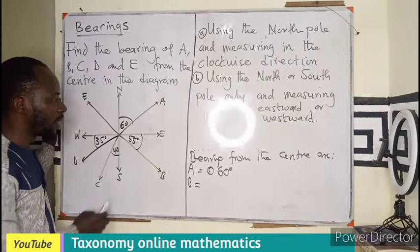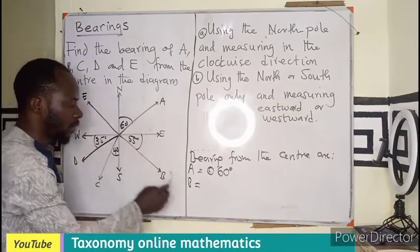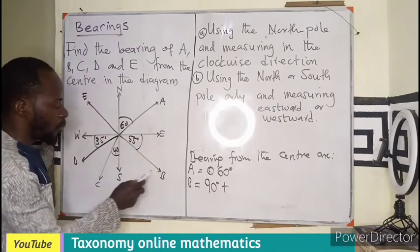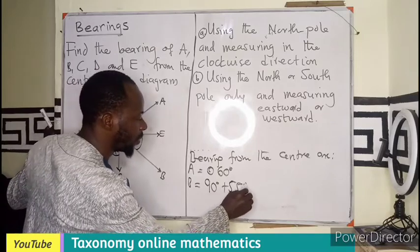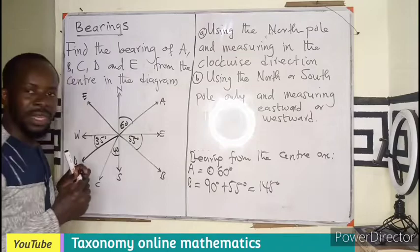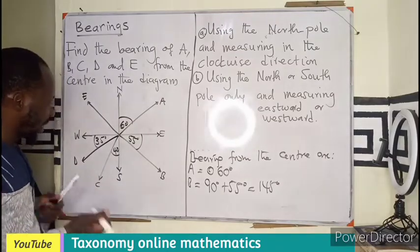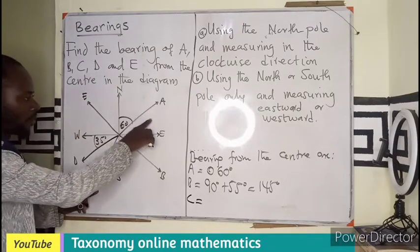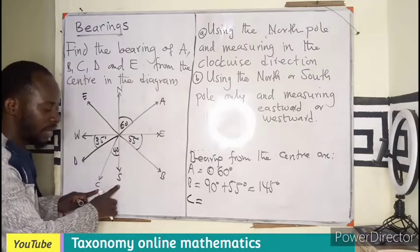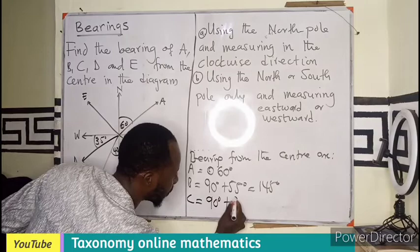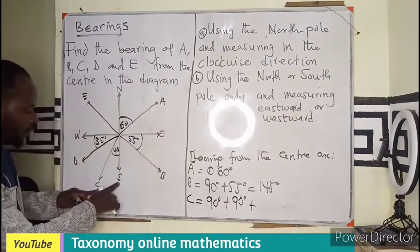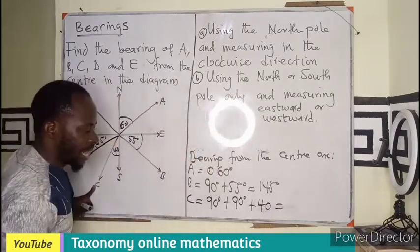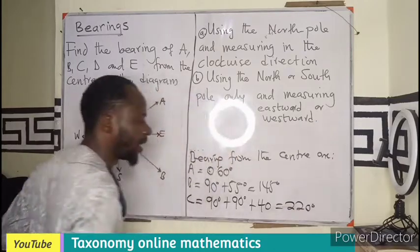To find the bearing of point B: from north to east is 90 degrees, and from east to point B is 55 degrees, so that gives us 145 degrees. For point C: from north to east is 90, east to south is 90, and from south to point C is 40 degrees. So 90 plus 90 plus 40 gives us 220 degrees — the bearing of point C from O.